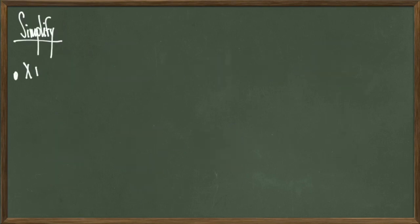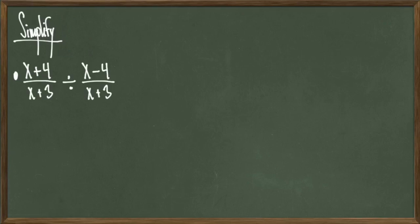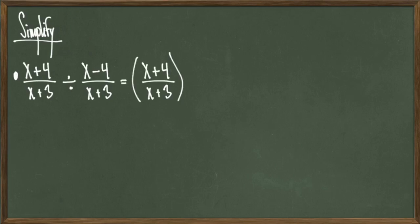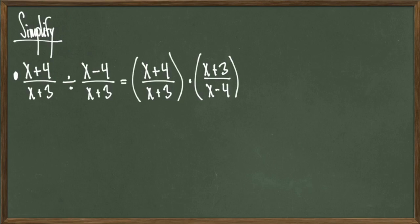For our next example, consider the quantity x plus 4 over x plus 3 divided by the quantity x minus 4 over x plus 3. Whenever we see the divide sign, we're going to take the fraction on the right, flip it upside down, and change division to multiplication. Therefore, I get the revised expression x plus 4 over x plus 3 times x plus 3 over x minus 4.